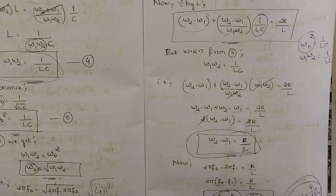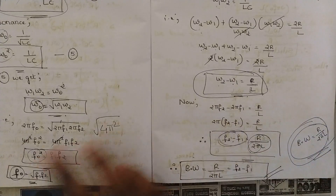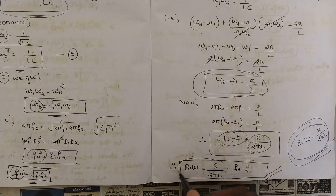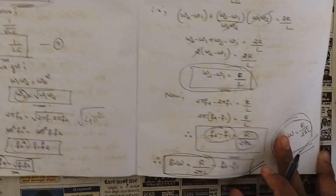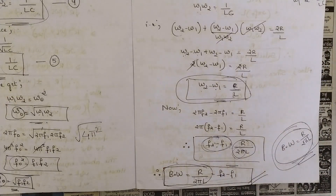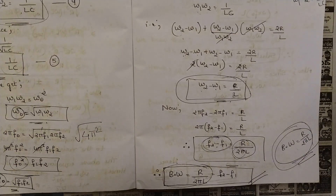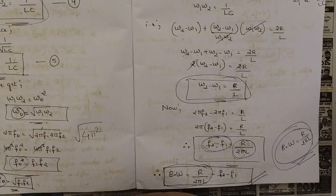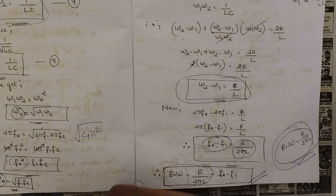That's all for this session. I have covered one important derivation — the internal relationships between the half-power frequencies — and derived the expression for bandwidth, which is R/(2πL). Please note these expressions as they are very important and will be used when solving problems in further sessions. Thank you, we'll see you in the next session.